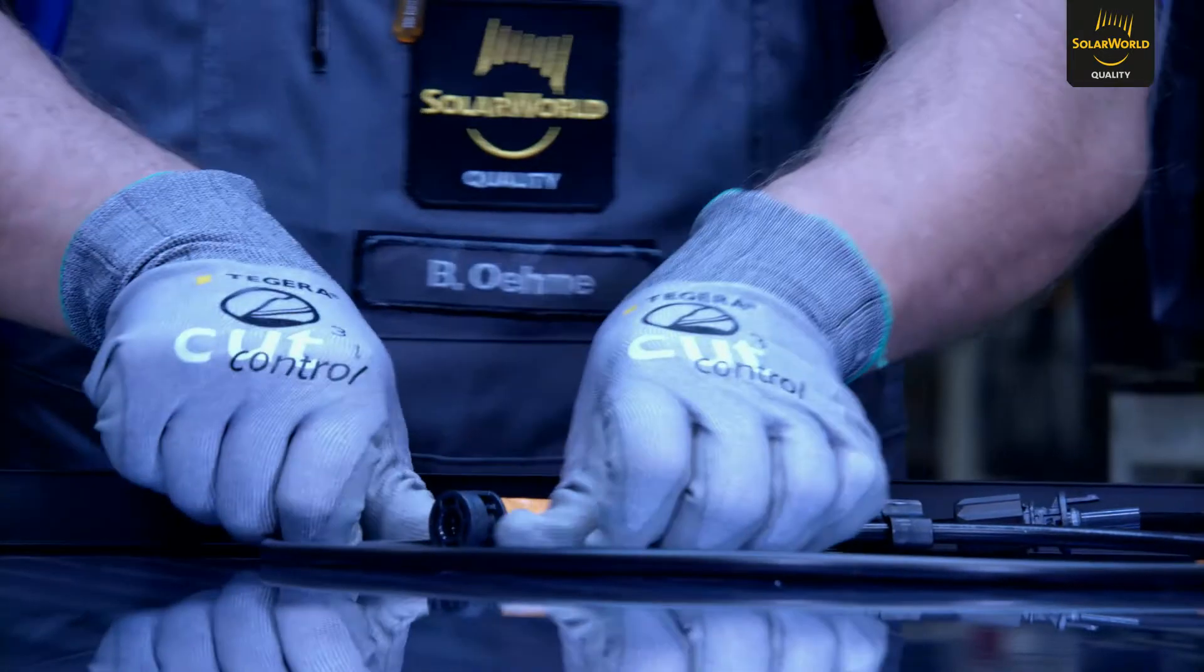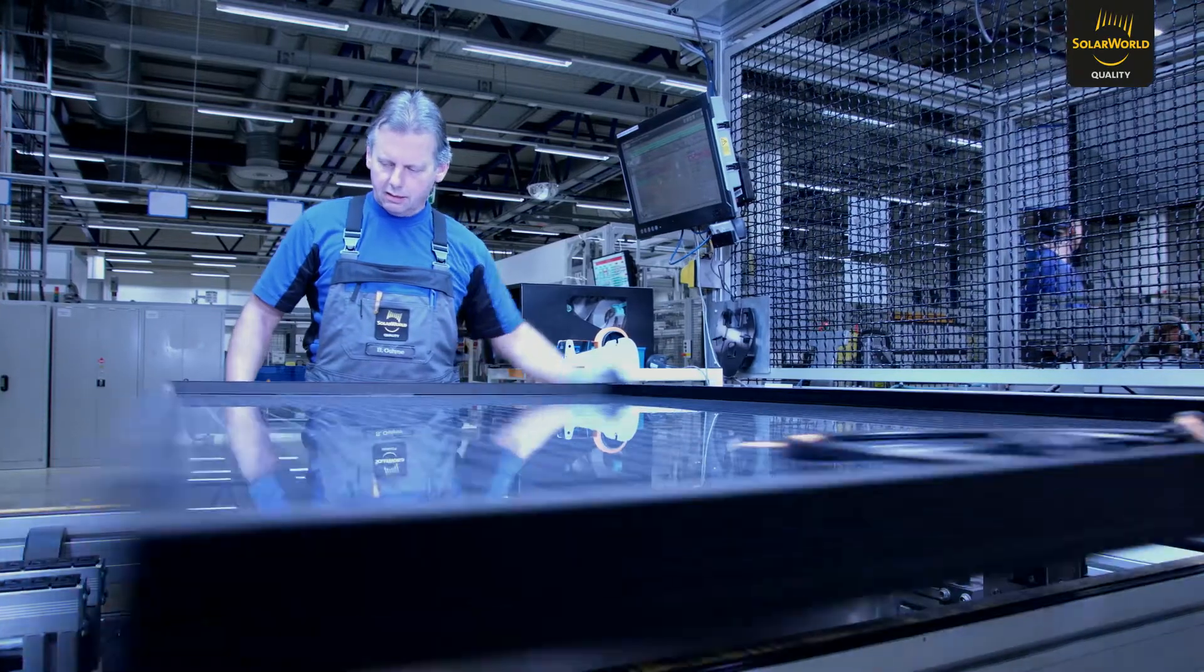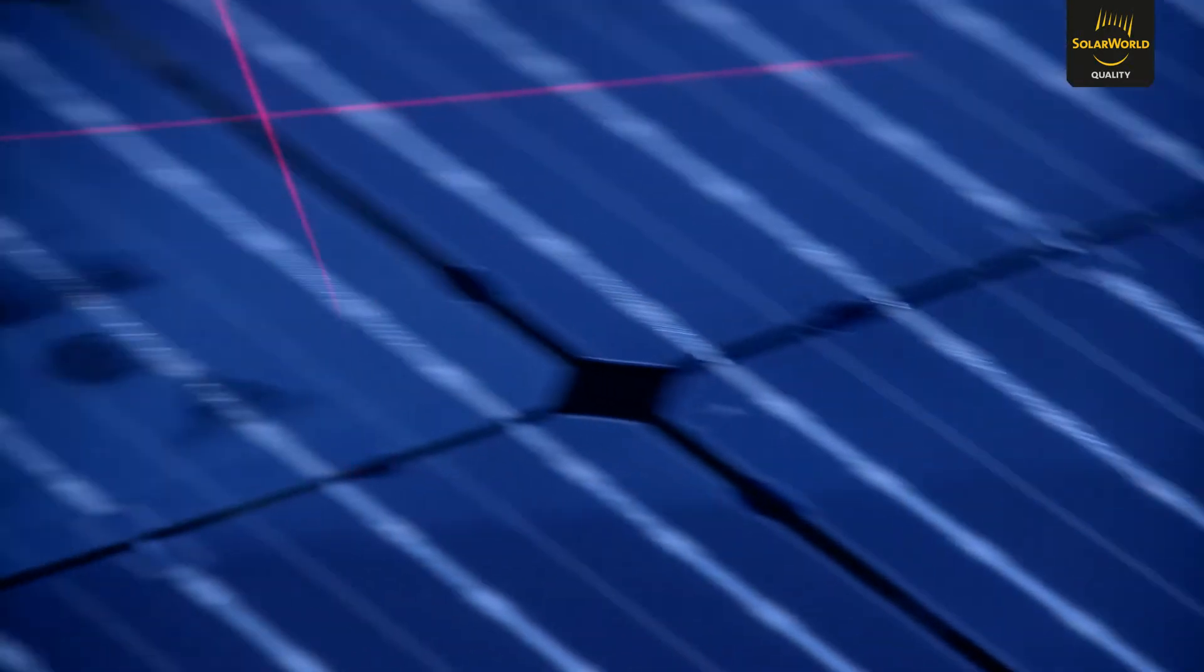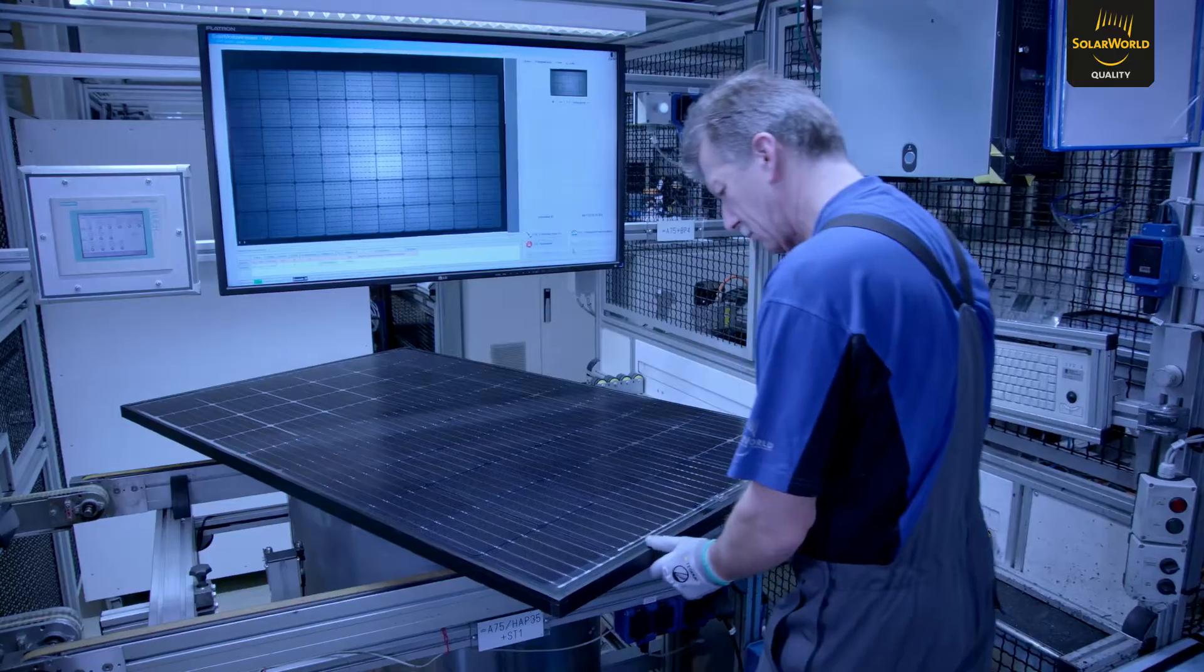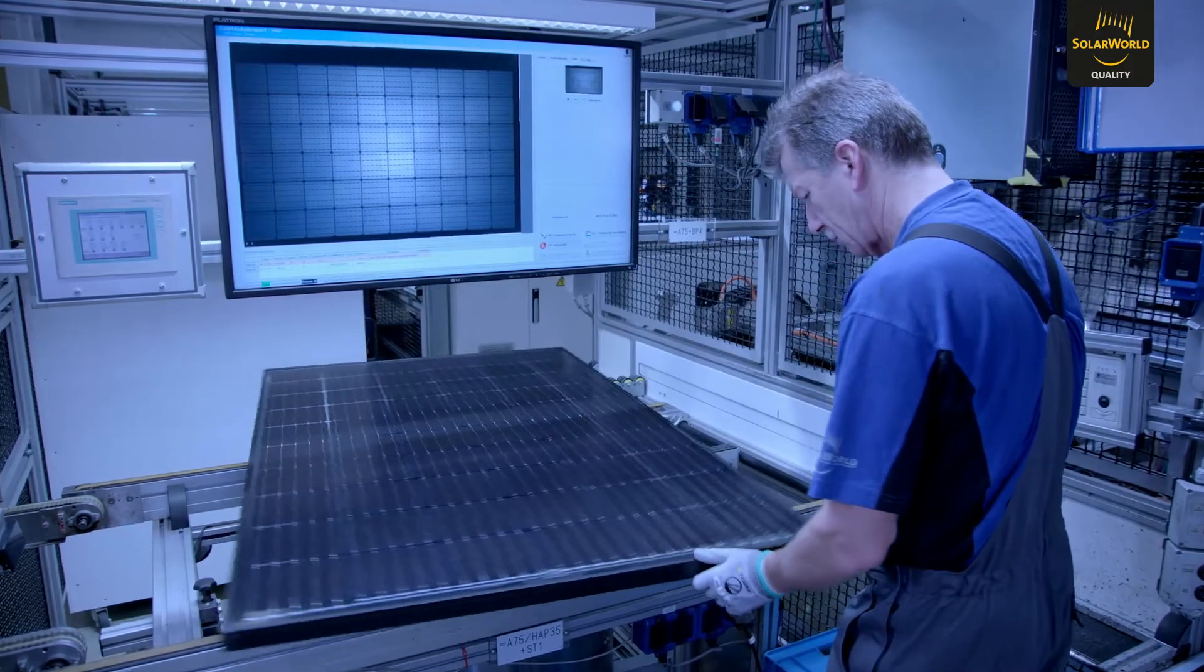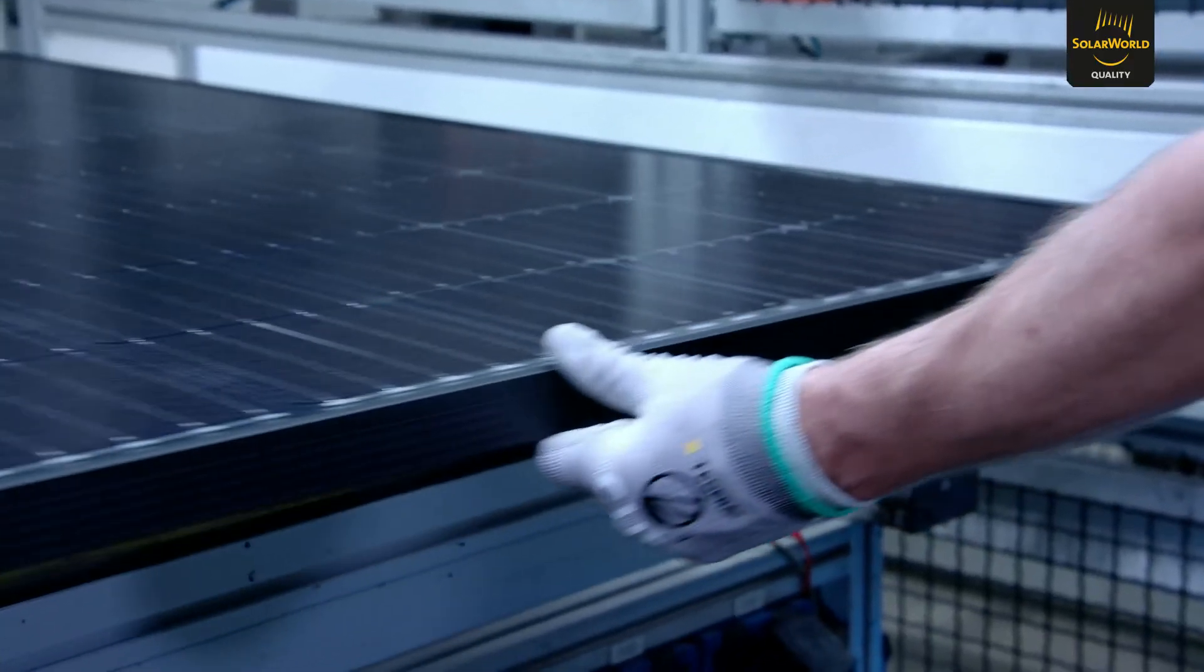This is where our continuous batch tracing ends. Each module is clearly marked with type, power class and production site. A final comparison of all test results and a final visual inspection by our module experts ensure that our modules produce electricity safely in the long term.